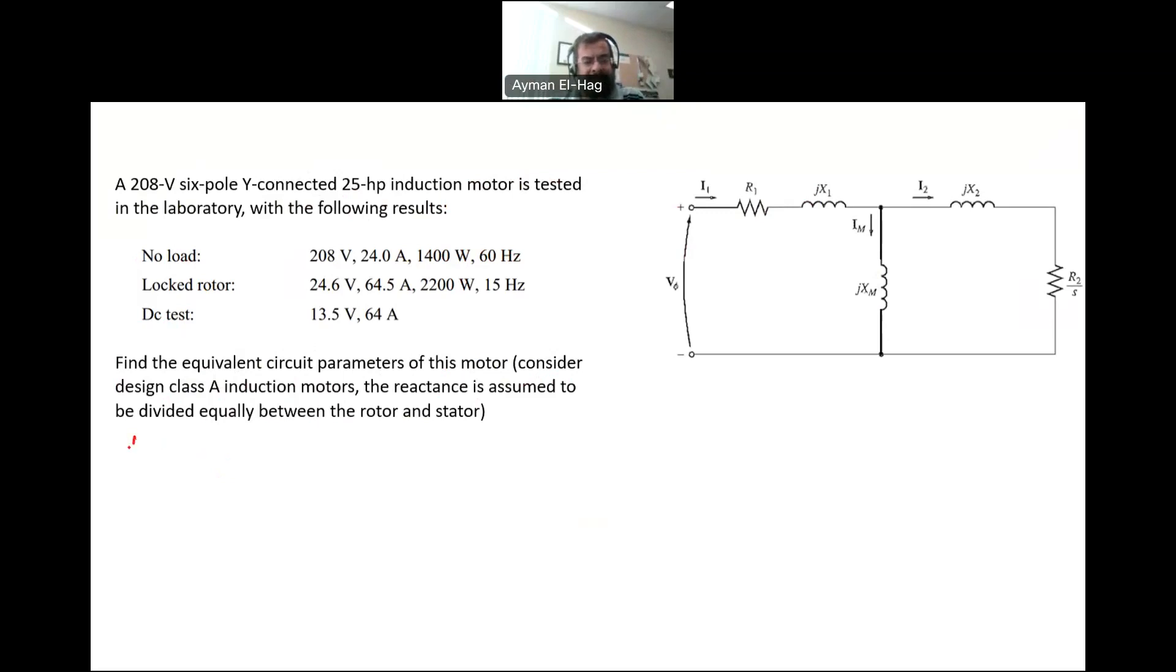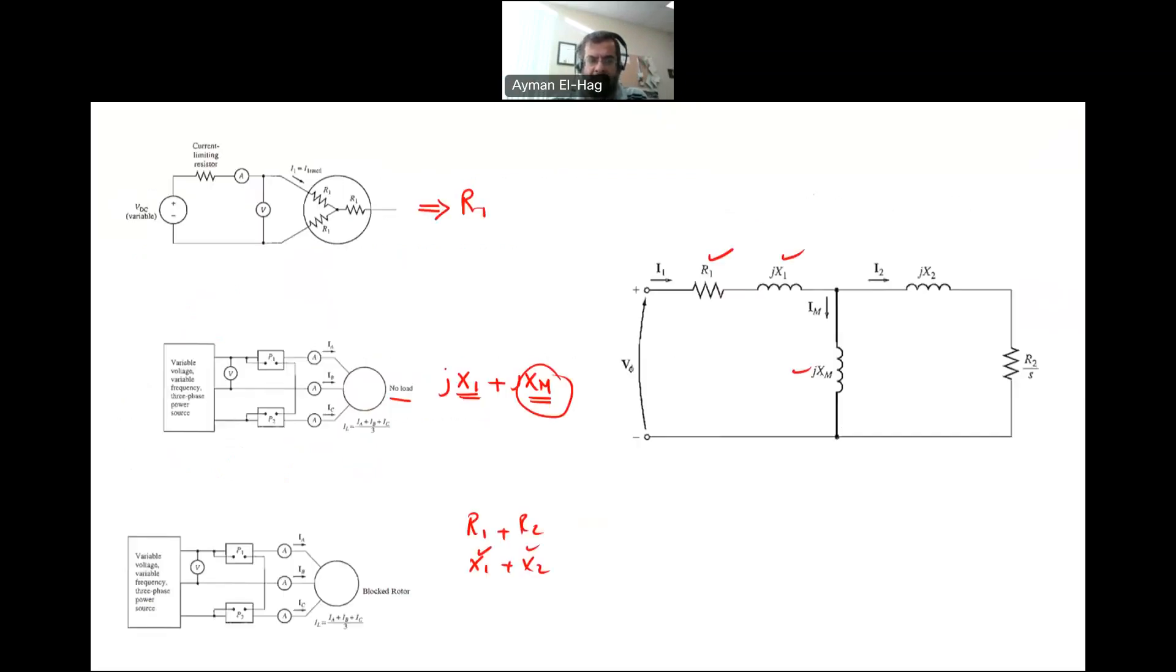We'll start with the DC test. As we mentioned, in the DC test we will be able to find R1. Since this is a Y-connection, 2R1 equals VDC divided by IDC. When we connect the DC between two terminals, it will have two of the resistors in series.